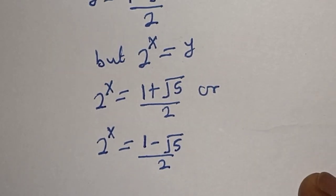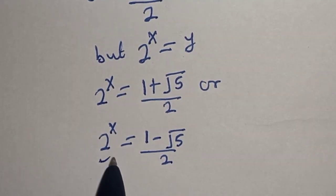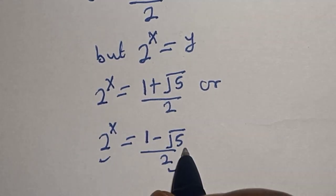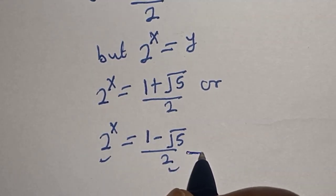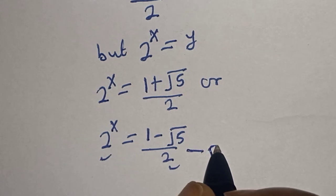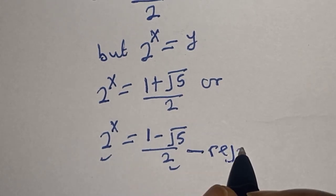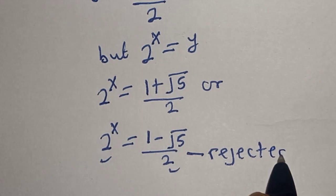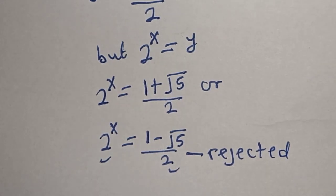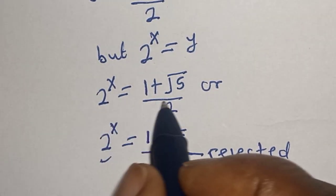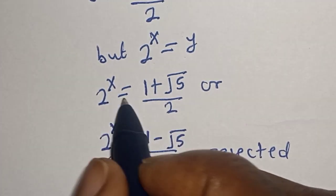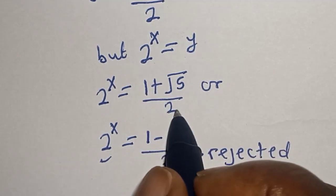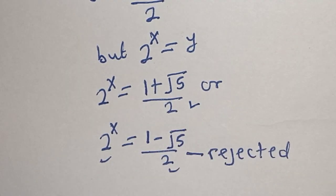But if you look at this, the first solution is positive and the second is negative. Therefore the second solution is rejected, since 2 to the power of x must always be positive. So the only solution we have is 2 to the power of x is equal to 1 plus root 5 over 2, and we work with this.